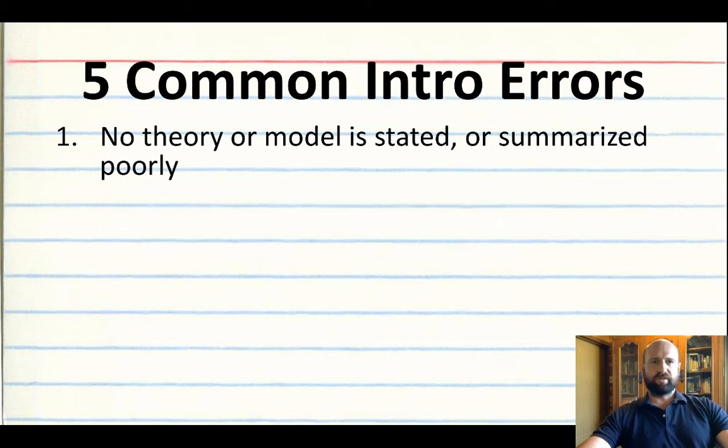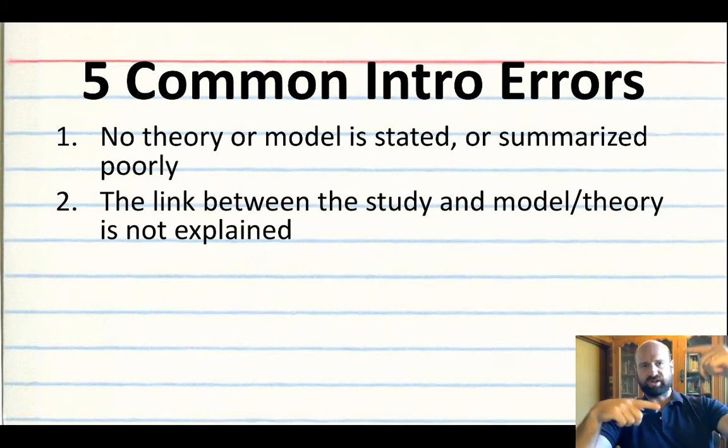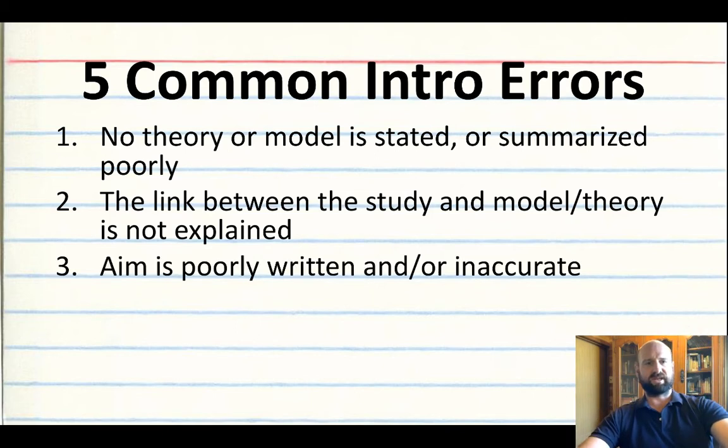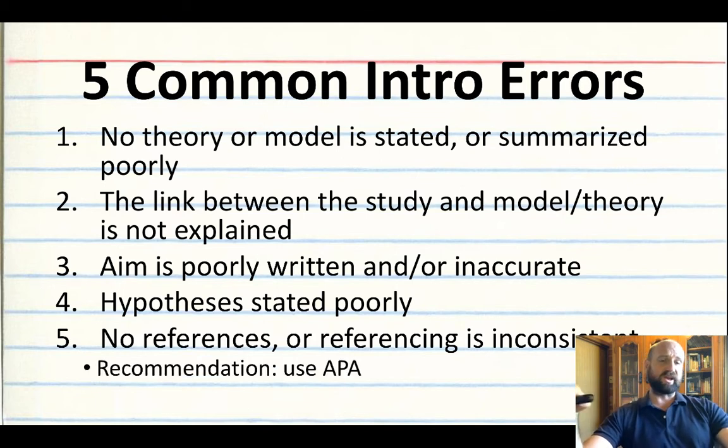So five common errors: no theory or model is stated - they have to have that in there. This is not a tricky one, it's pretty straightforward, but students miss it. A lot just go from model/theory to study, and there's no connection. That has to have the connection. Aim and these three things here are pretty straightforward, speak for themselves. So this is what we're looking for them to not have, I should say.